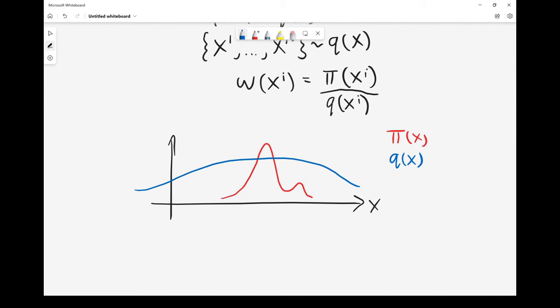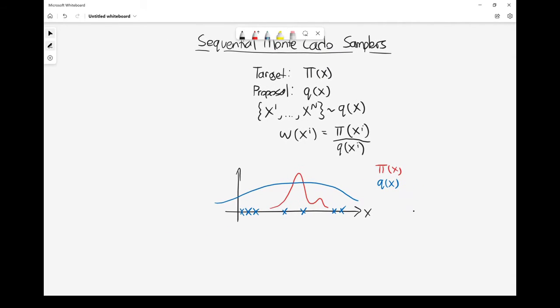Then what happens, or what might happen in this case, is you generate some samples and the majority of them are kind of useless because the weights, the importance weights associated with them, are very small because π is very small in these regions. Actually the only samples with significant weights in this particular case would be these two. So it can be quite wasteful because you can end up generating lots and lots of samples, and very few of them contribute to your overall Monte Carlo estimates. This is actually the first step really in a sequential Monte Carlo sampler, but it is just importance sampling at this stage.